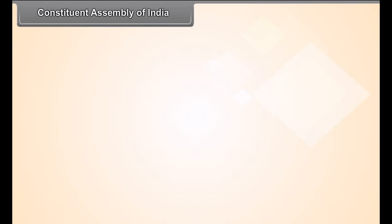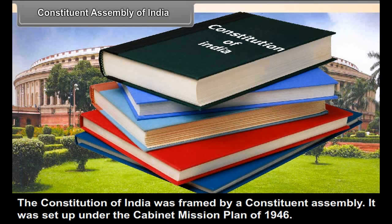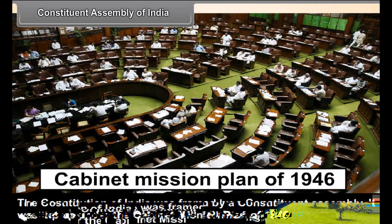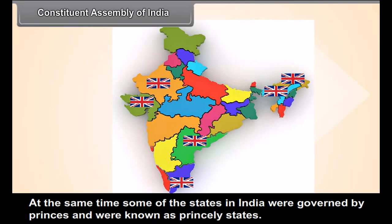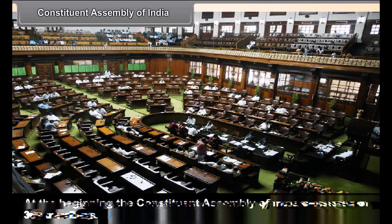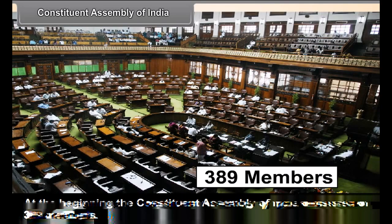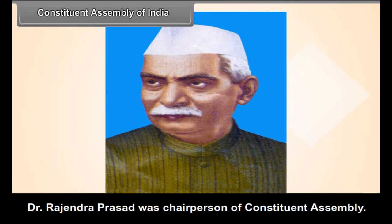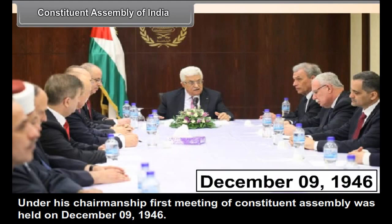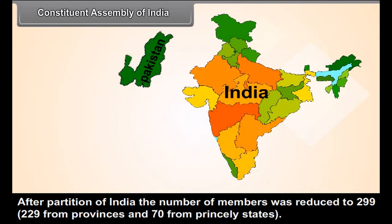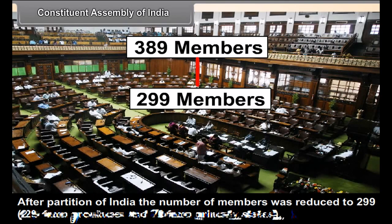Constituent Assembly of India. The Constitution of India was framed by a Constituent Assembly, set up under the Cabinet Mission Plan of 1946. The British government had divided India into various provinces for administration, while some states were governed by princes and were known as princely states. At the beginning, the Constituent Assembly consisted of 389 members. Dr. Rajendra Prasad was the chairperson, and under his chairmanship, the first meeting was held on December 9, 1946. After the partition of India, the number of members was reduced to 299.